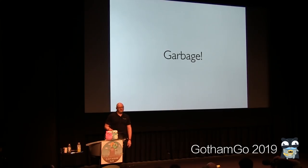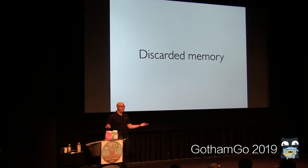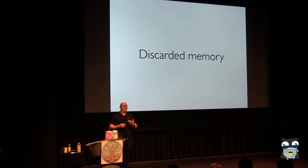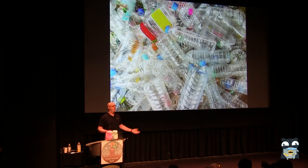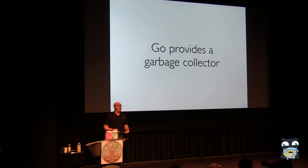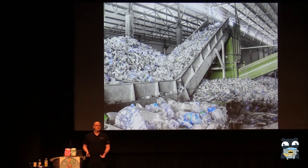This talk is about garbage. Since we're programmers, we're talking about discarded memory — some object that you had that was really useful, you got it off the heap, and then when you're done with it, you just kind of drop it on the ground. Some programs do this a lot, producing many objects that get created and discarded. Go provides a garbage collector in the runtime to sweep up all these things and make them usable again. But some programs produce so much garbage that the garbage collector gets really, really busy hauling around all of this trash.